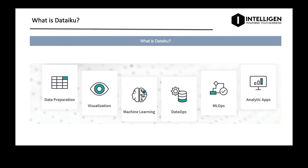That includes feature engineering and automating the model training process itself. DataIQ projects are the central place for all of the work and collaboration for users. Each project has a visual flow including the pipeline of data sets and recipes associated with the project. DataIQ aims to slot itself in across the entire lifecycle of the statistical modeling process — all the way from data preparation to visualizing outputs, applying machine learning algorithms, then crucially deploying models and realizing business value.